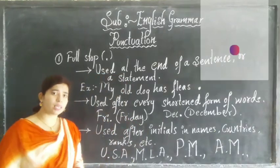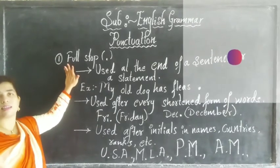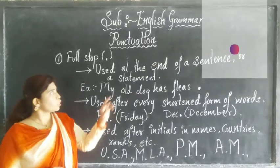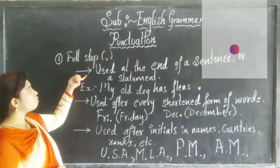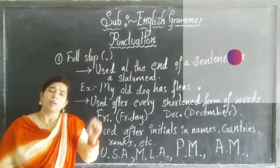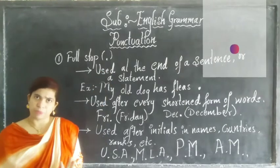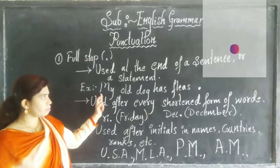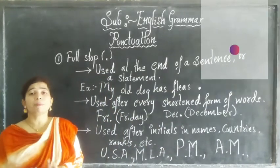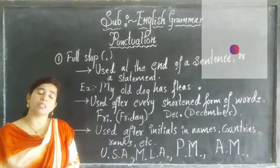Our first topic is full stop. Full stop is very important to end the sentence. Whenever we are concluding a sentence with a proper meaning, we should put a full stop. The first use is: it is used at the end of every sentence or statement. Whenever we complete a proper meaning statement, we put the full stop. For example, 'My old dog has fleas.' Full stop is here — it completes the meaning of the sentence. Wherever the full stop is, we stop and understand the meaning.